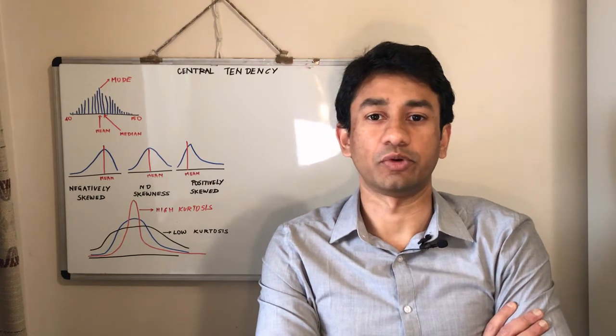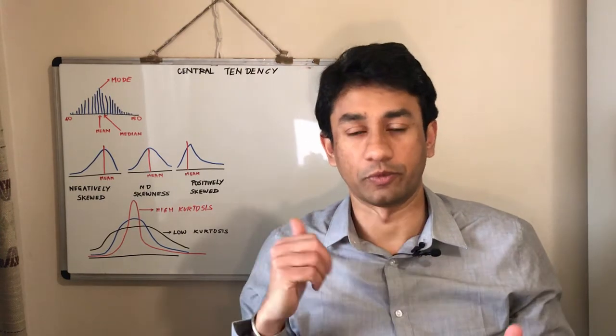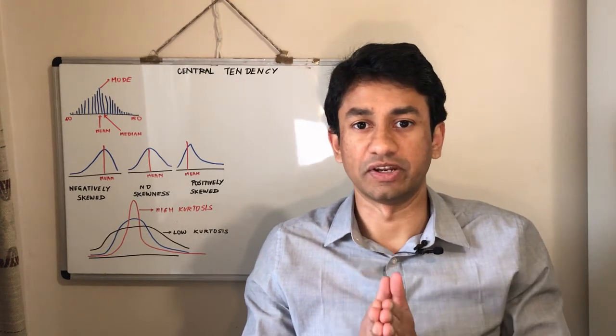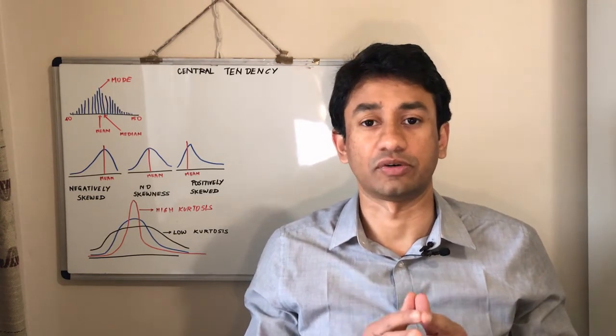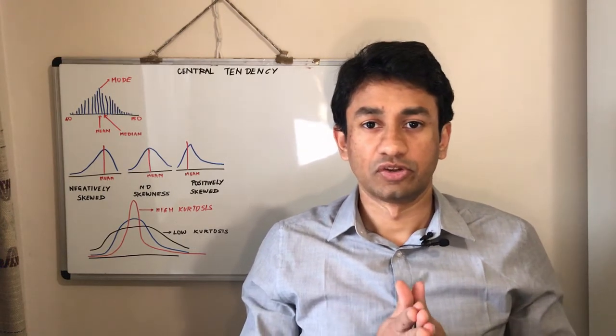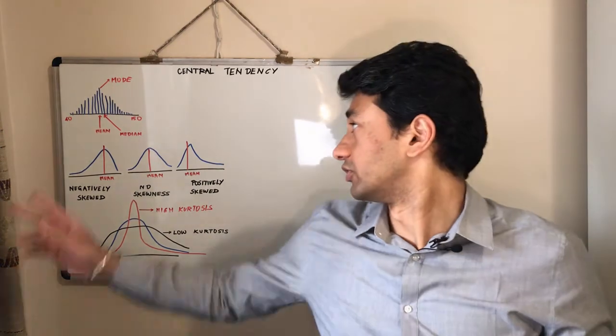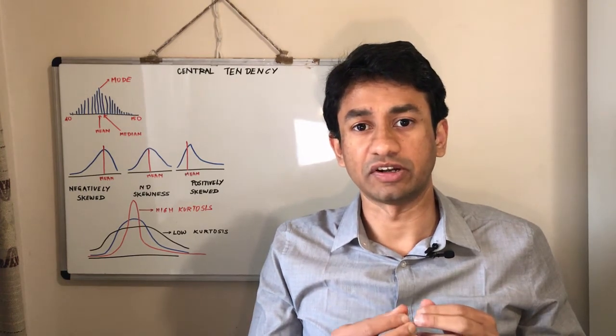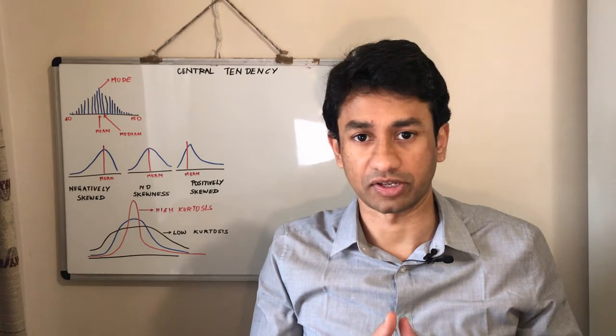Today's session is going to be a bit different. I'm going to swap between the whiteboard and screen sharing just to explain these concepts well enough before going into the tutorial. The first thing I want to explain is the basic concepts of central tendency, which means checking the mean, median, mode, as well as skewness and kurtosis in the actual data. As you see in the chart, these concepts are really important and they help us in conveying what is happening in the data set.